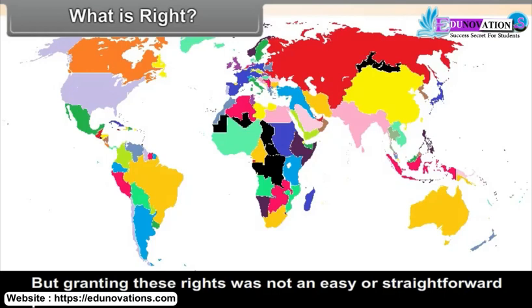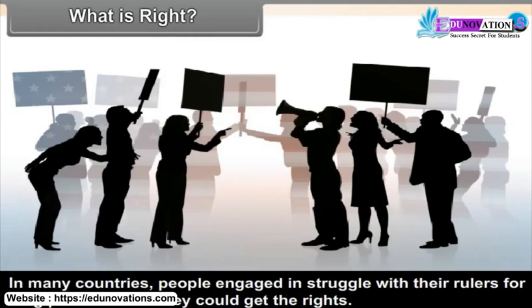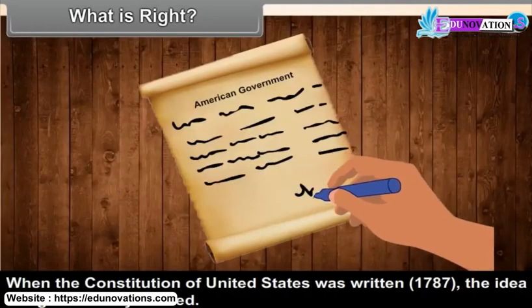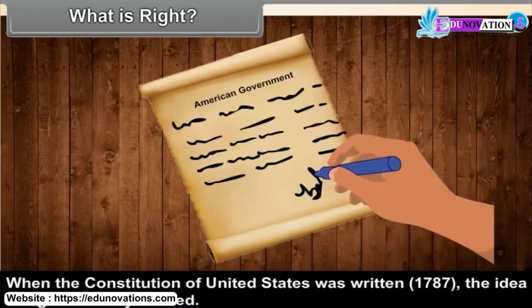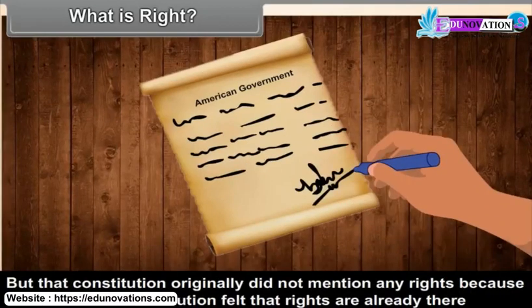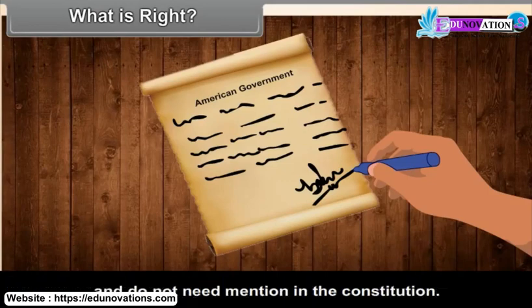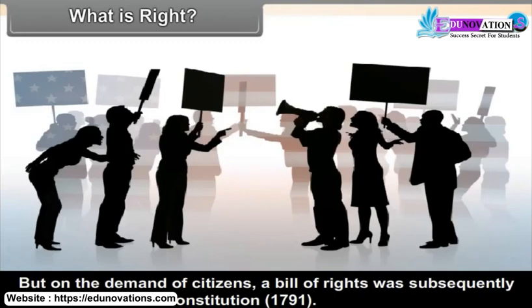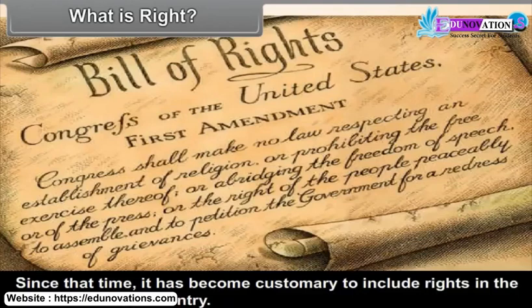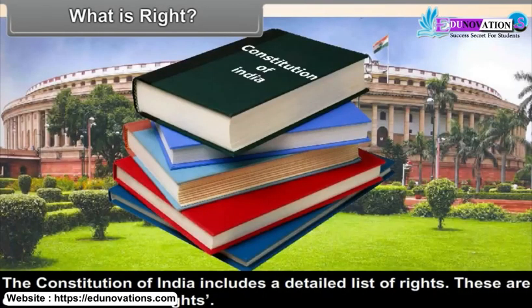But granting these rights was not an easy or straightforward process. In many countries, people engaged in struggles with their rulers for long periods before they could get their rights. When the Constitution of the United States was written in 1787, the idea of rights existed. But that Constitution originally did not mention any rights, because the makers felt that rights are already there and do not need mention. On the demands of citizens, a Bill of Rights was subsequently included in the U.S. Constitution in 1791. Since that time, it has become customary to include rights in the constitution of a country. The Constitution of India includes a detailed list of rights, called fundamental rights, meaning they are of fundamental importance.